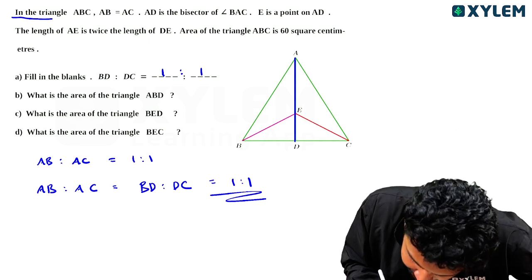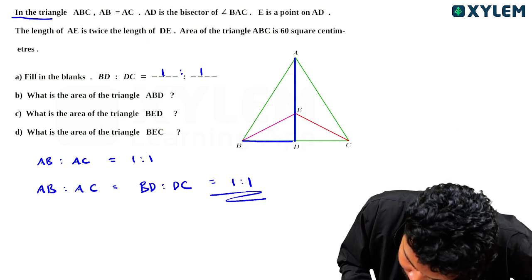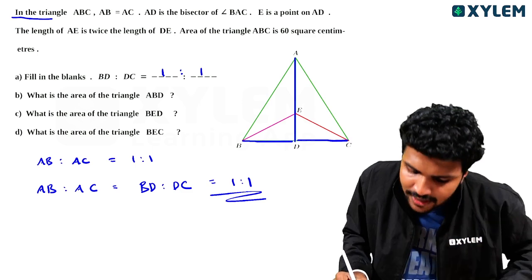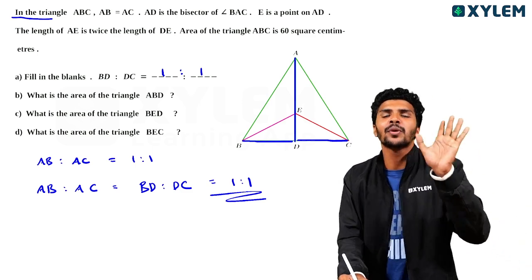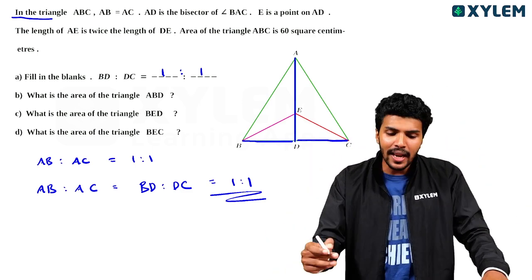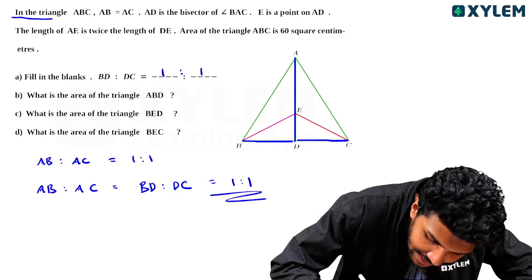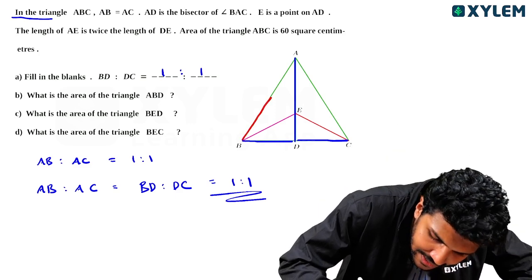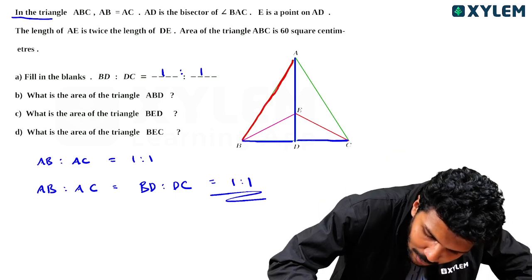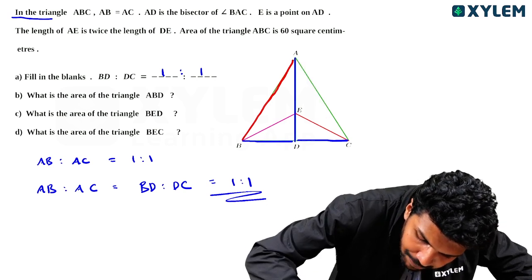That's why, what do you think about BD? What do you think about DC? BD and DC are equal. That's what you think about — these two triangles are equal.